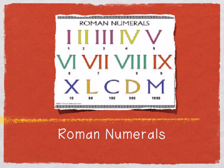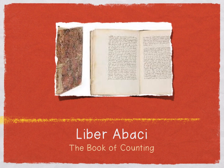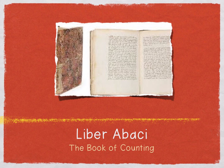Fibonacci was so taken with Arabic numbers that he wrote a book called Liber Abaci, the Book of Counting. In this book, he really wanted to teach his Italian friends how to use the Arabic numbers. But because he knew that people don't really like change, Fibonacci decided to fill his book with a lot of riddles and puzzles — recreational math problems that would be solved using the new number system. He thought that would interest his people enough to learn the new numbers.